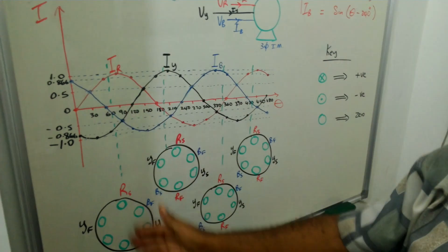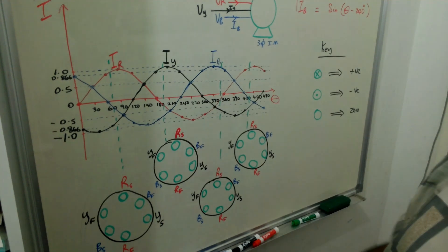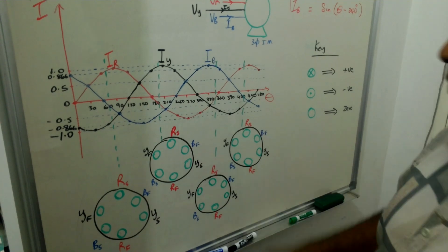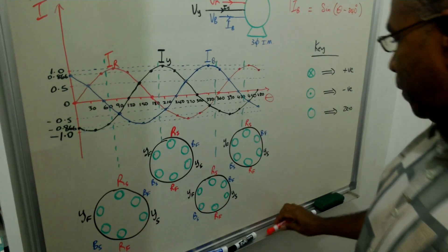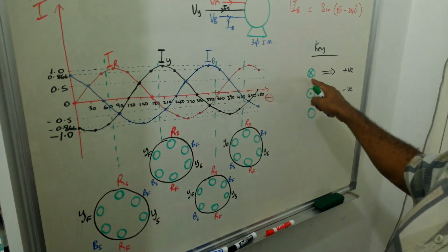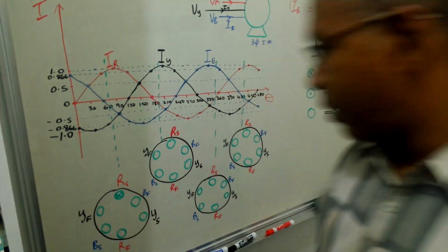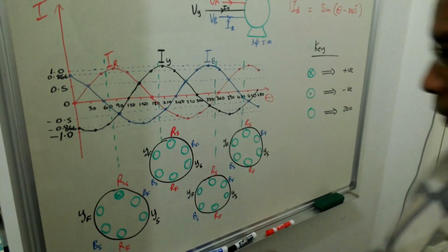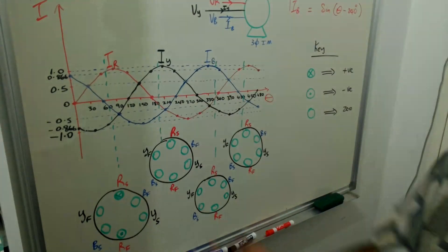We're looking at arbitrary points along the waveforms. We're going to start here somewhere around 60 degrees and look at what is happening to each of the waveforms. The red phase is positive, so it is represented by a cross. The start is represented by a cross, which means the current is going away from you. The finish would be represented by a dot, which means the current is coming towards you.